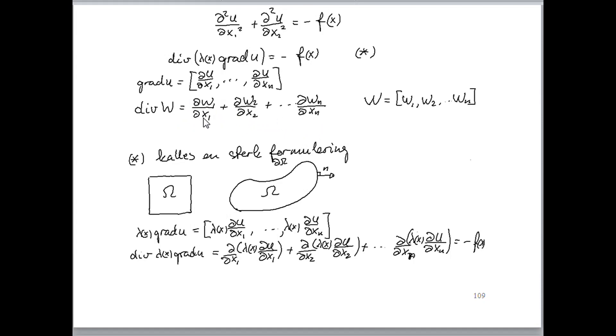The first term is the partial derivative of the first component of w with respect to the first variable. The second term is the partial derivative of the second component of w with respect to the second variable, and so on.